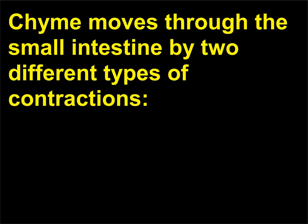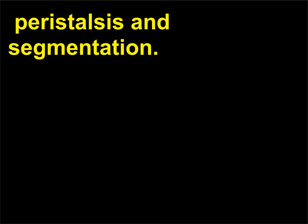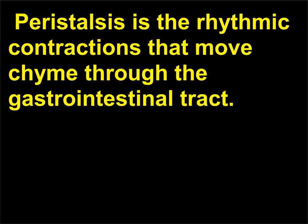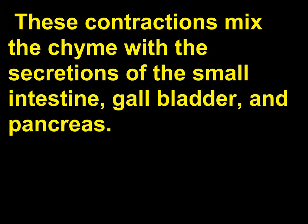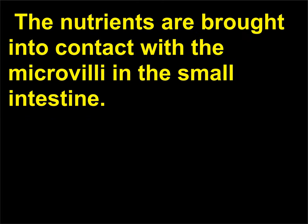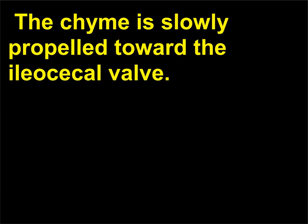Chyme moves through the small intestine by two different types of contractions: peristalsis and segmentation. Peristalsis is the rhythmic contractions that move chyme through the gastrointestinal tract. Segmentation involves localized contractions of small segments of the small intestine. These contractions mix the chyme with the secretions of the small intestine, gallbladder, and pancreas. The nutrients are brought into contact with the microvilli in the small intestine. The chyme is slowly propelled toward the ileocecal valve.